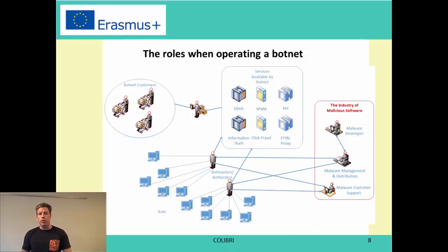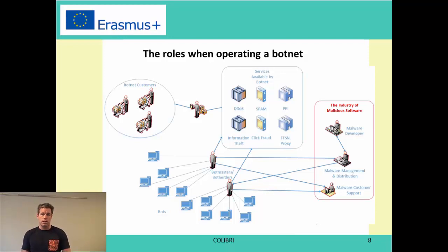I will also say something about the roles when operating a botnet, because especially for larger networks it's actually really organized crime. On the left side we can see there are botnet customers — people who want to buy something. That could be someone who wants to buy 1,000 clicks on a certain banner, which is click fraud. It could be someone wanting to DDoS a competitor's website for 12 hours, or buy 1,000 credit card numbers. These are the customers. They go to the bot master and say what they want. The bot master then controls this in his botnet, and it's actually really easy to control a botnet.